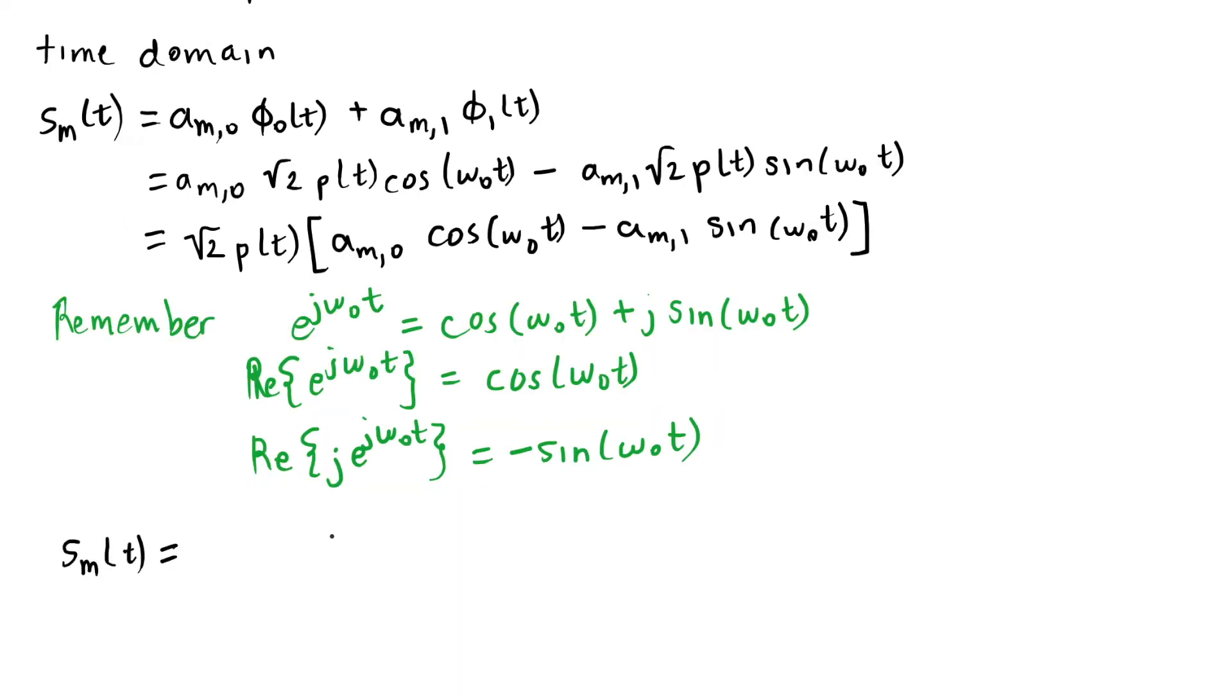So what we're going to do is we're going to write s_m(t) again with a real operator. And when I take the real part of the e^(j omega_0 t) in this part I'm going to get a cosine term, and that's going to be what I had up here.